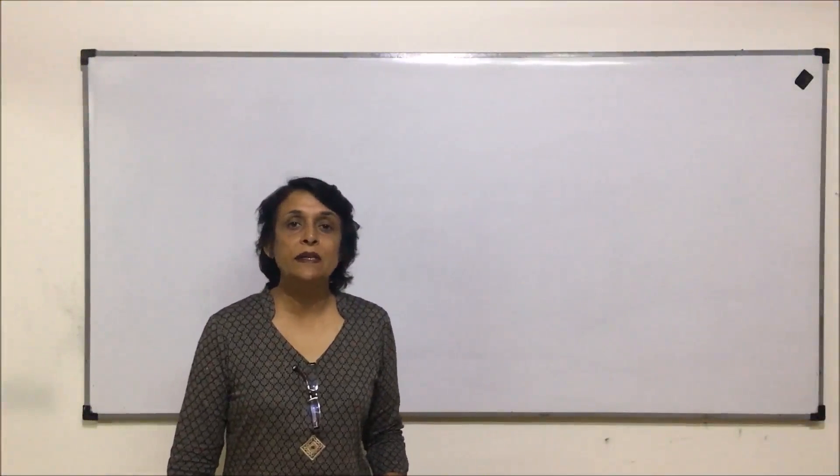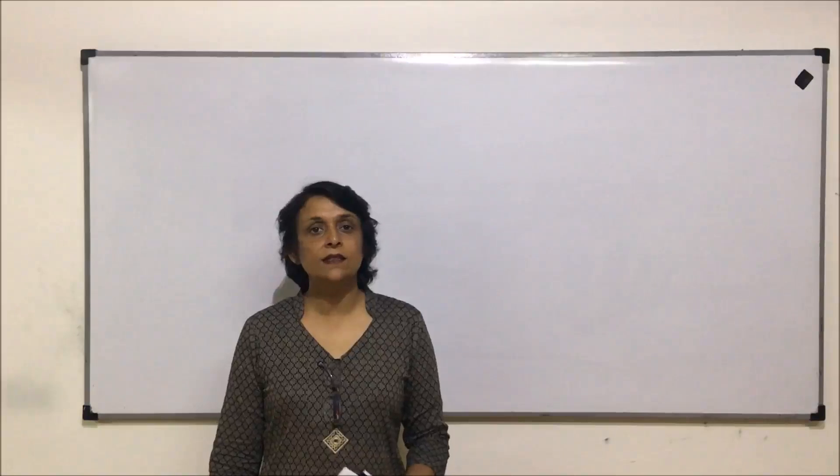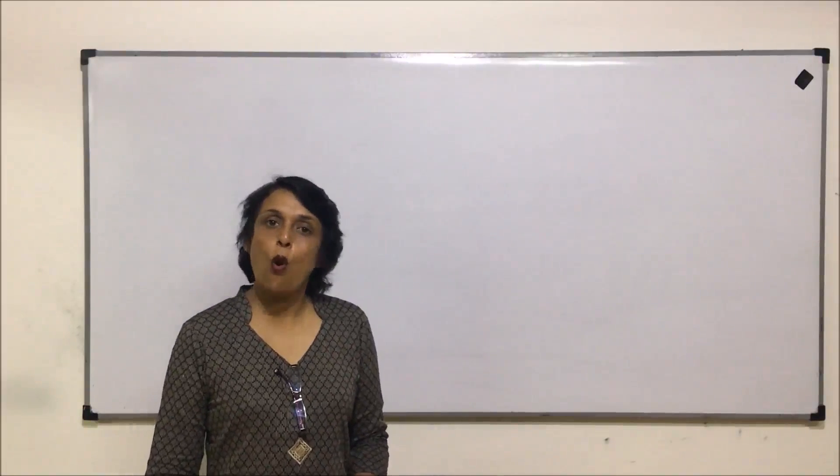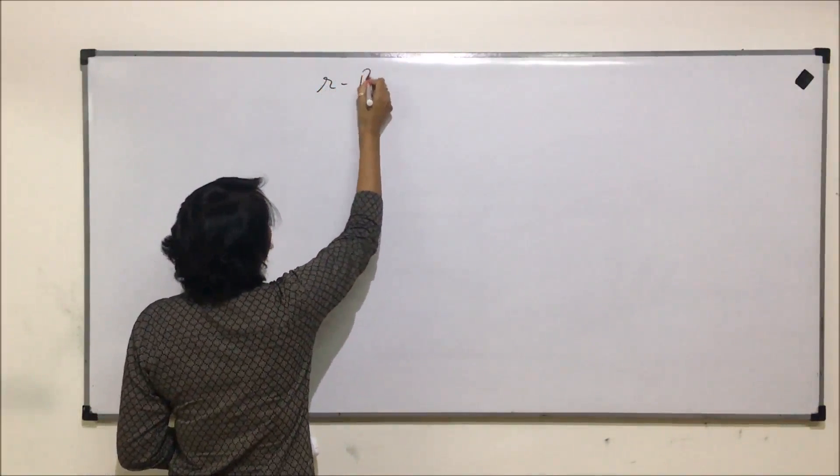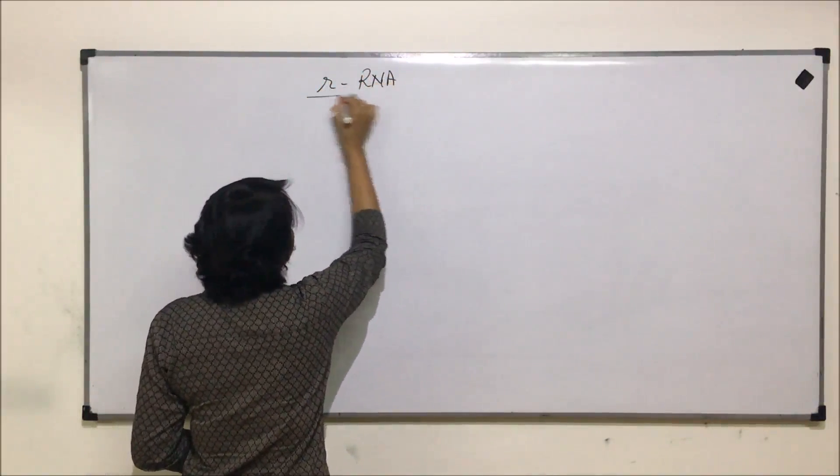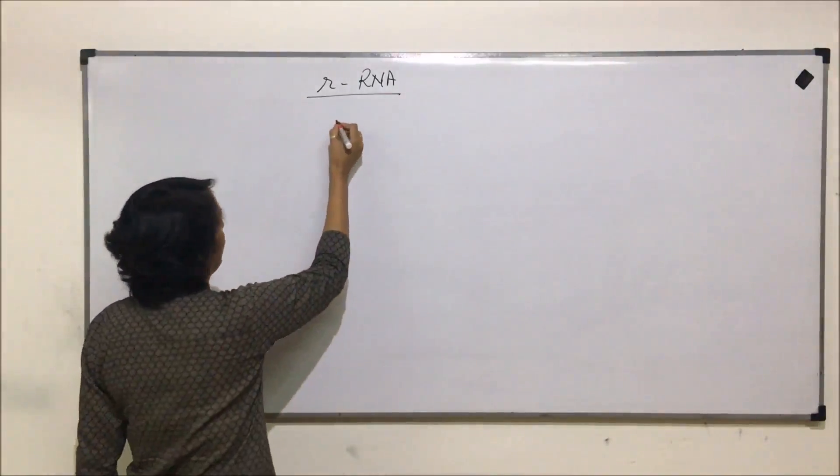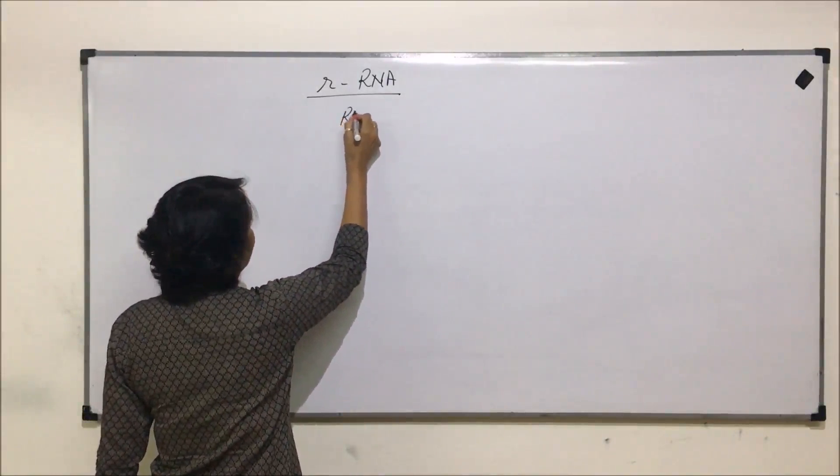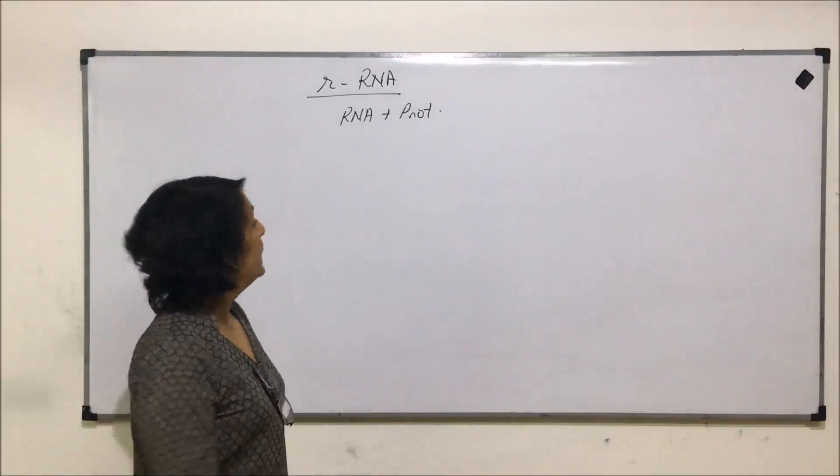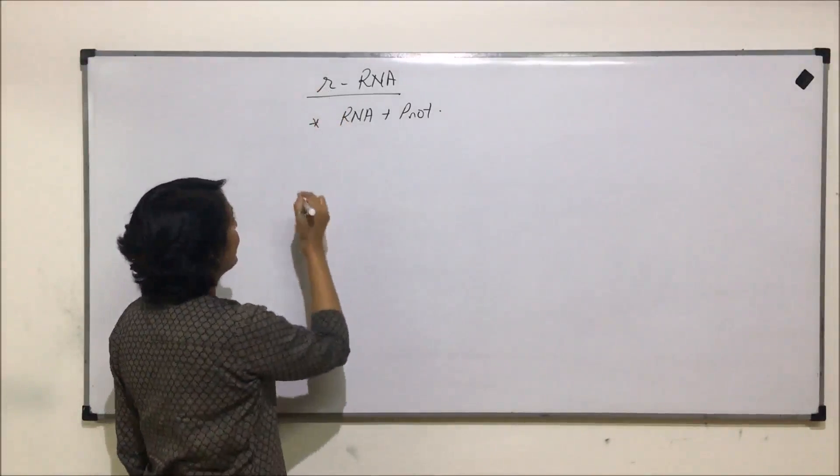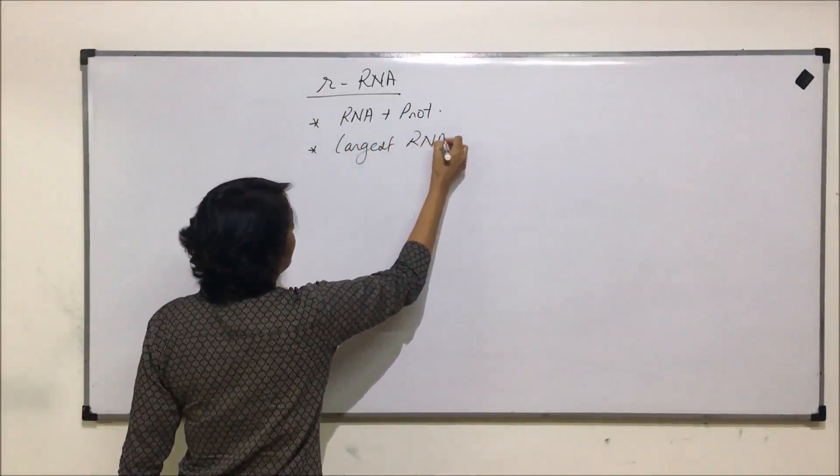In this video, we will talk about rRNA, that is ribosomal RNA, and certain other things related to all nucleic acids. rRNA, that is ribosomal RNA, is associated with protein. It is RNA associated with proteins and it is also considered the largest RNA.